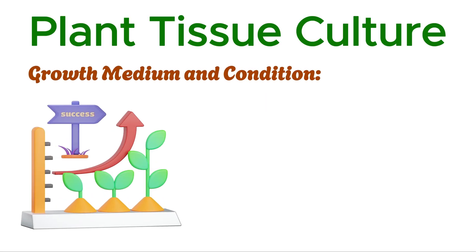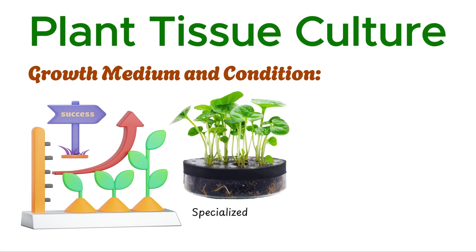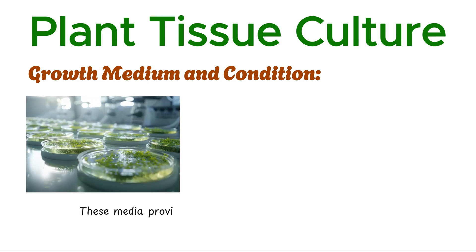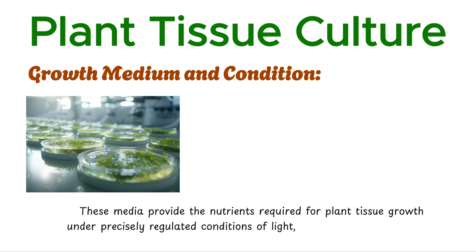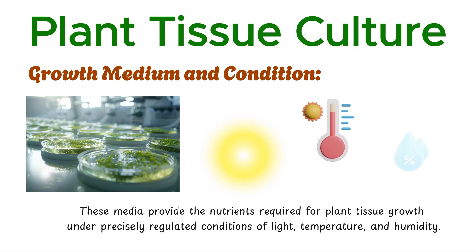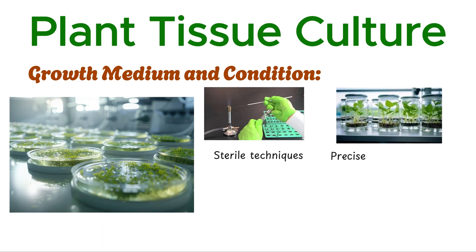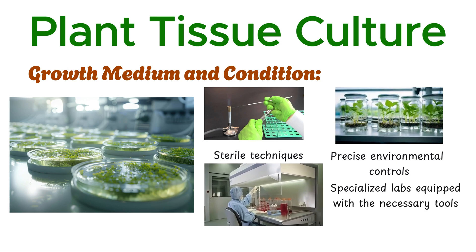The success of plant tissue culture depends on specialized growth media, which may be liquid, semi-solid, or solid, such as nutrient-rich broths or agar. These media provide the nutrients required for plant tissue growth under precisely regulated conditions of light, temperature, and humidity. This delicate process demands sterile techniques, precise environmental controls, and specialized labs equipped with the necessary tools and chemicals. Its meticulous nature underscores its critical role in advancing scientific research and agricultural practices.